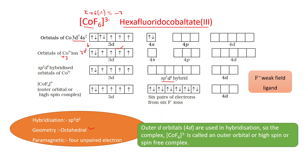Experiment shows this complex is octahedral and paramagnetic, with a magnetic moment corresponding to four unpaired electrons. To explain this, it is assumed that in the presence of F⁻, a weak-field ligand, the electrons do not get paired. The empty 4d orbitals of the outermost shell take part in hybridization, giving sp³d². The six sp³d² hybrid orbitals accept six pairs of electrons from the six F⁻ ions. Since outer d orbitals (4d) are used, this is an outer orbital, high spin, or spin-free complex — hybridization sp³d², geometry octahedral, paramagnetic due to four unpaired electrons.